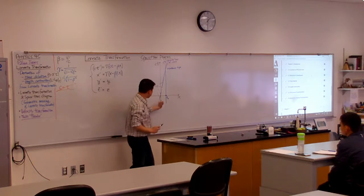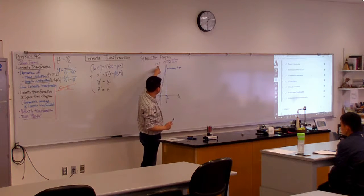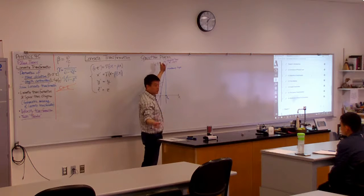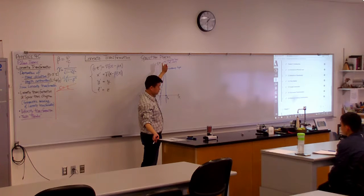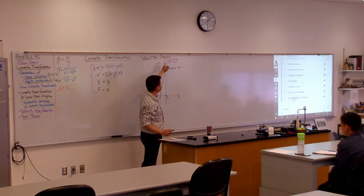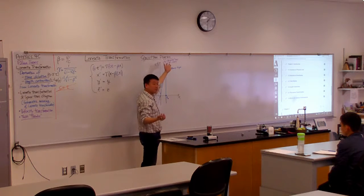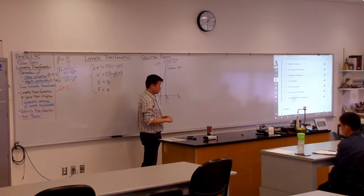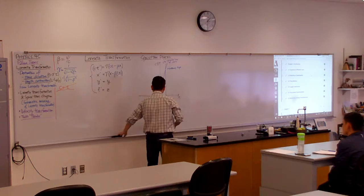Because that's what the t axis means. All the t axis means is the set of points where x is equal to 0. So ct prime axis is the whole set of points where x prime is equal to 0. Good? Not all that surprising.